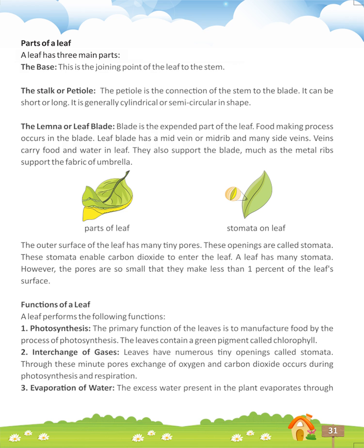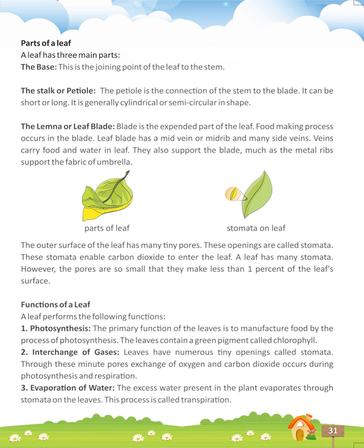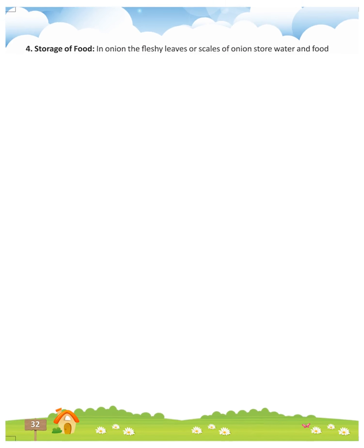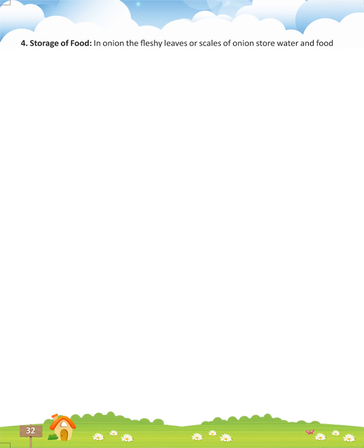3. Evaporation of water — the excess water present in the plant evaporates through stomata on the leaves. This process is called transpiration. 4. Storage of food — in onion, the fleshy leaves or scales store water and food in them. Fleshy and succulent leaves of desert plants also store some water and food in them.